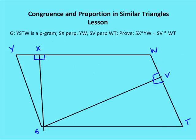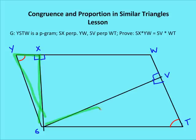Let's apply this knowledge to a problem. YSTW is a parallelogram, SX is perpendicular to YW, and SV is perpendicular to WT. We want to prove that SX times YW is equal to SV times WT. We have a parallelogram, and we know that opposite angles in a parallelogram are congruent, so angle T and angle Y are congruent. With two right angles and those congruent angles, we have two similar triangles: SXY and SVT.